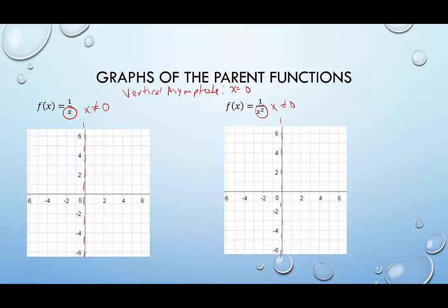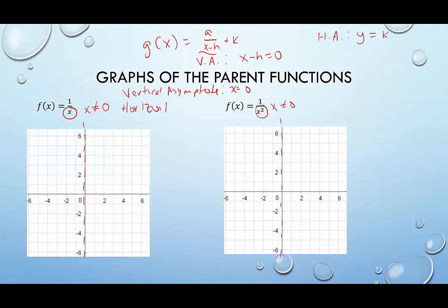The next thing we want to identify is where the horizontal asymptote is. For these types of functions, g of x equals our coefficient over x minus h, plus k. The x minus h tells us our vertical asymptote — setting x minus h equal to 0 and isolating x. For each reciprocal graph, the horizontal asymptote is given by y equals k. For the parent functions, nothing is being added, so k equals 0, and the horizontal asymptotes for both are y equals 0.